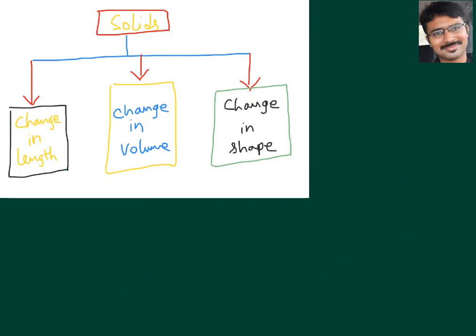Now we are going to discuss the concept of mechanical properties of solids. Mainly in this chapter I am making three categories: when the solid changes in terms of length (change in length), second is change in volume, and third is change in shape.